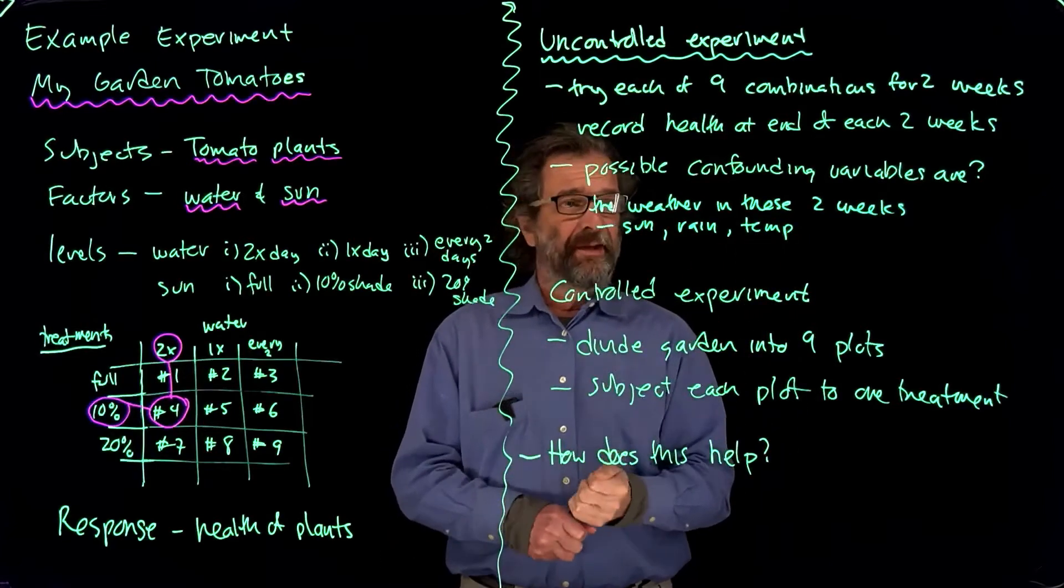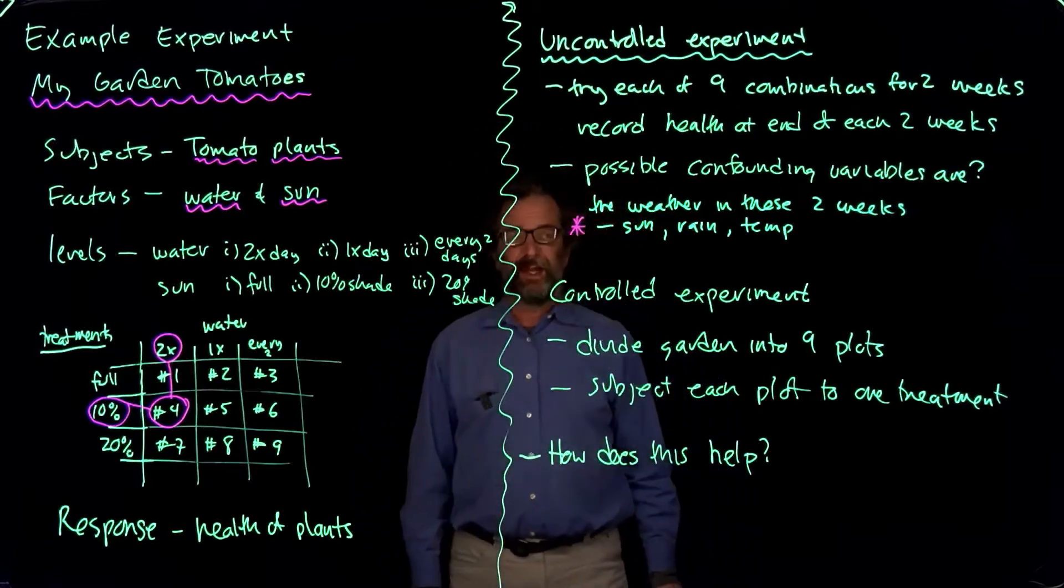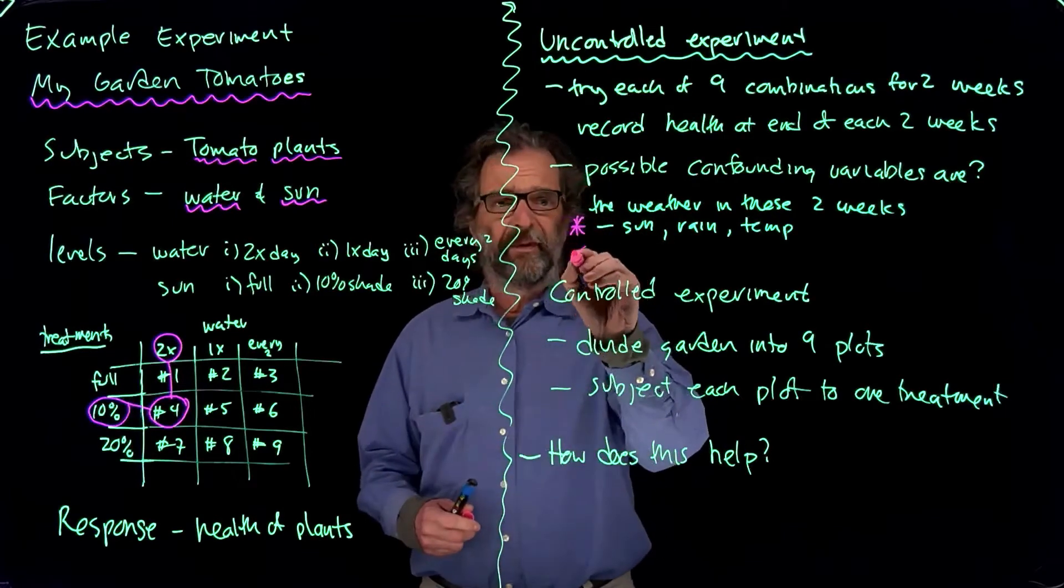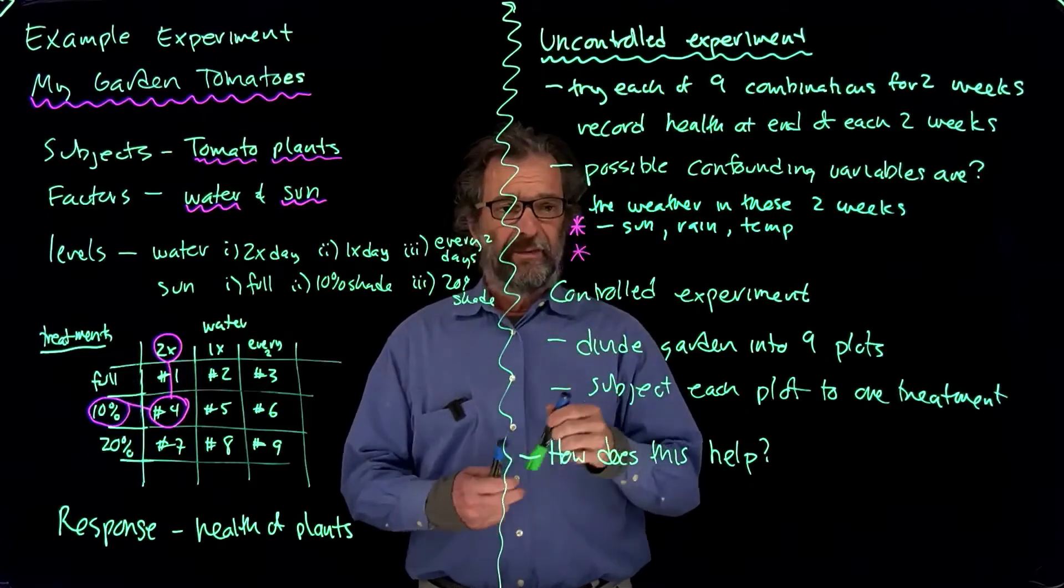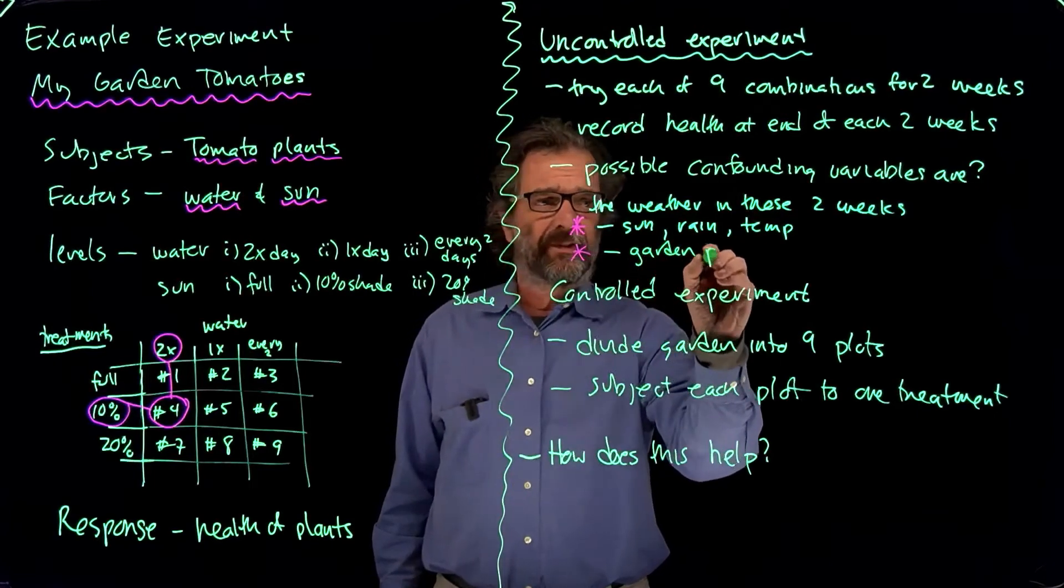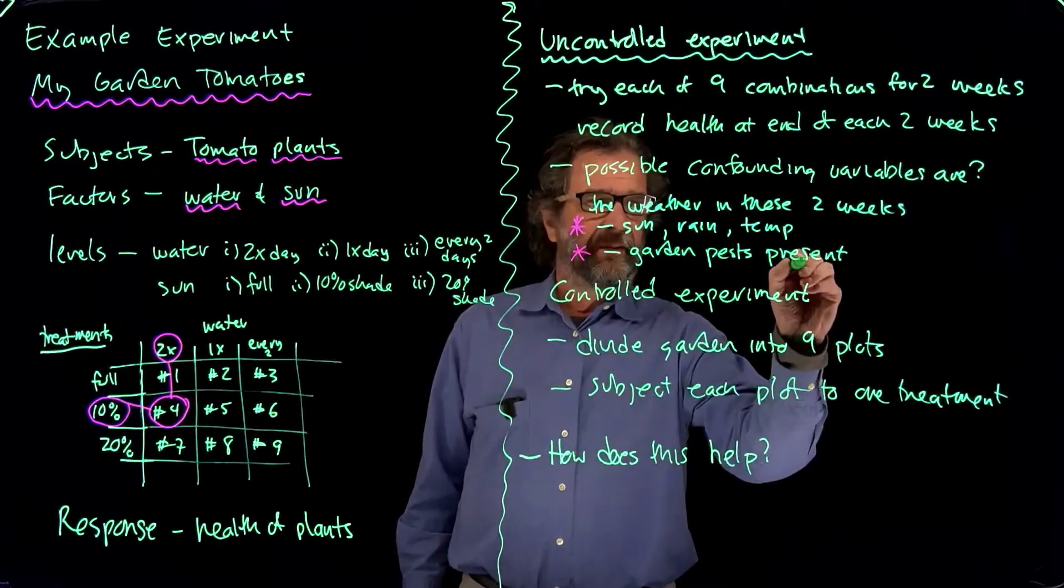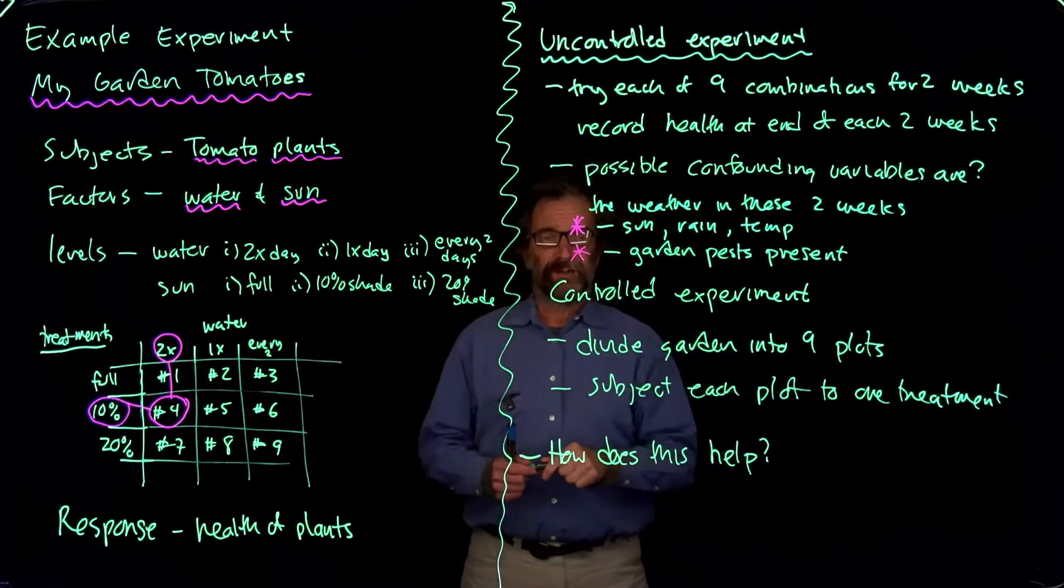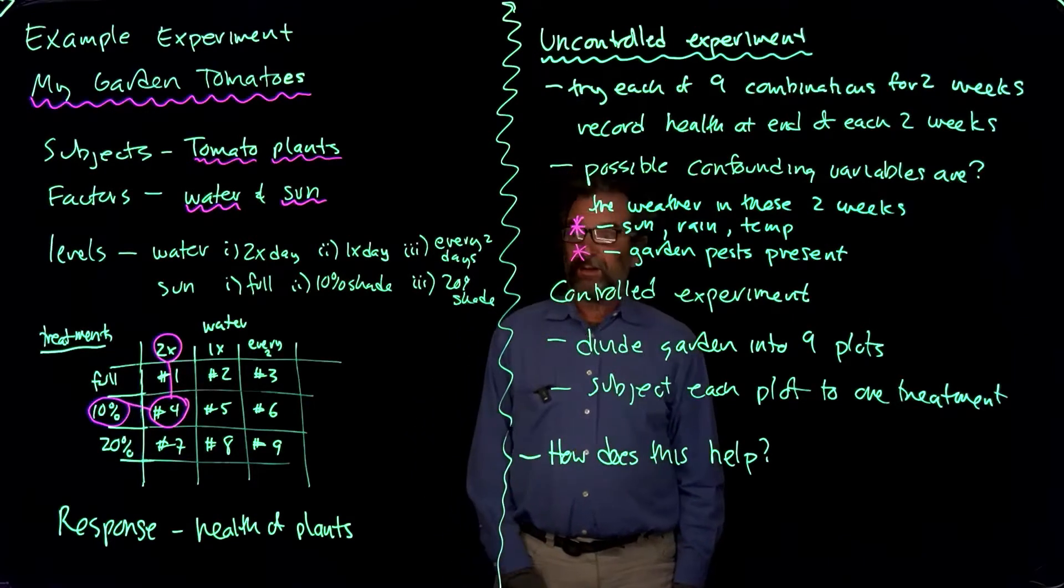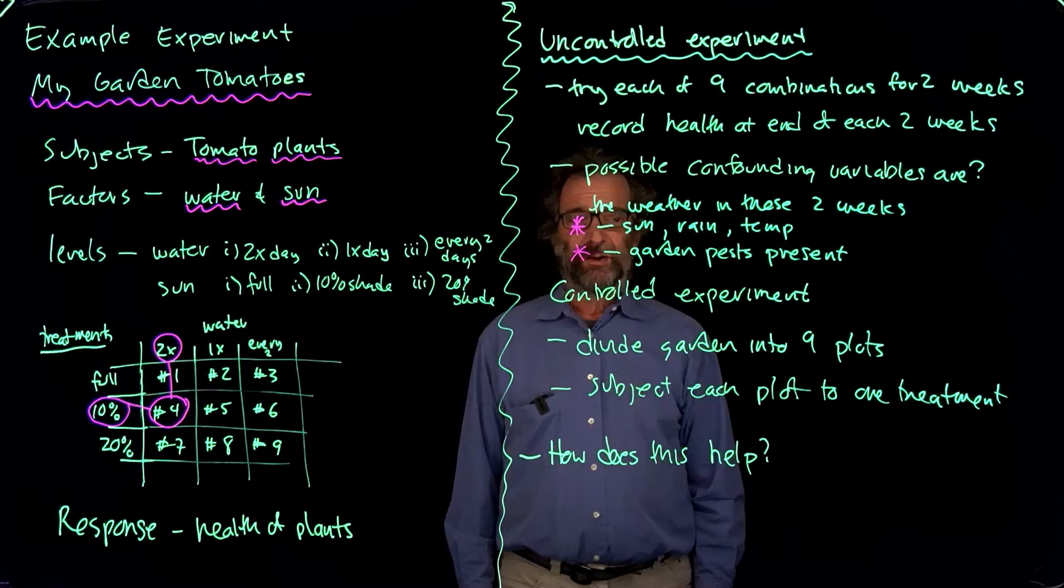So all those are possible confounding variables that the weather might be responsible for what happens to the plants. And then we've got another one, which is less obvious unless you garden a lot, would be the garden pests that are present during that period. It might impact the health of the plants and not the watering scheme. So sometime in those two weeks, we'll have a lot of grasshoppers trying to kill everything, making the plants less healthy. Maybe spider mites or who knows what else might show up on tomatoes.